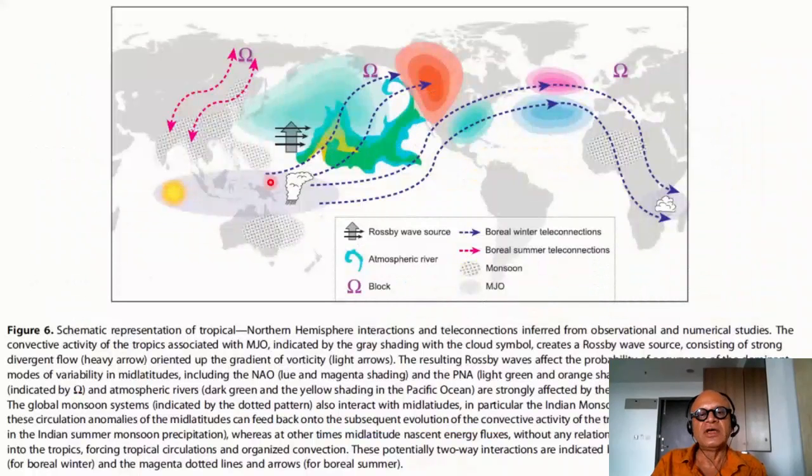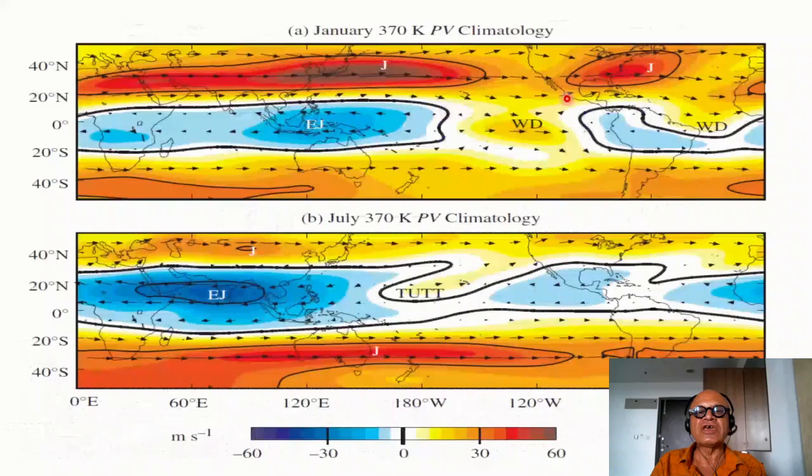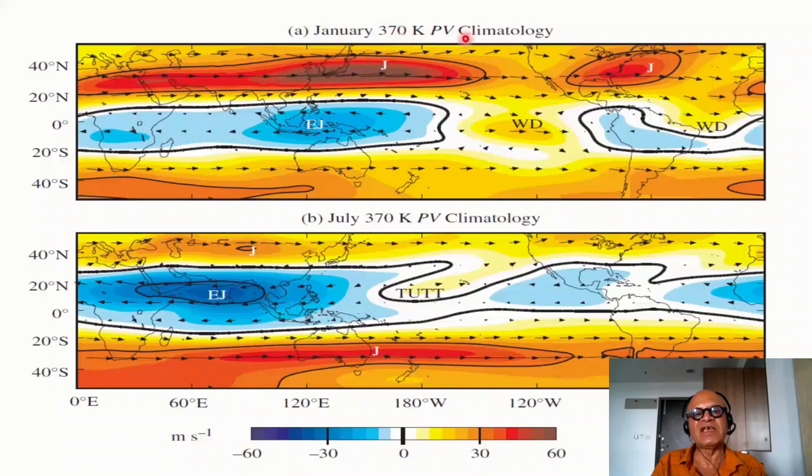For example, the MJO heating onto the NAO happens with a couple of weeks lag and same thing with the PNA pattern and so on. Nonetheless, looking at the January 370K isentrope PV climatology, you see the storm tracks and the jet streams there. You see the easterly jet here in the tropics with the westerly duct appearing as a main feature in the climatology of potential vorticity which allows for extratropical Rossby waves to come into the deep tropics. There are lots of details on why this is so critical.